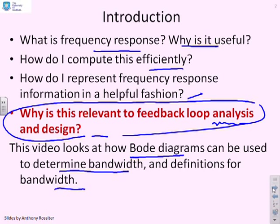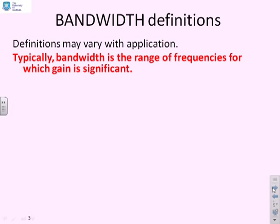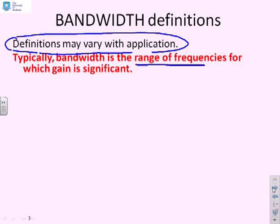First, let's start with some definitions for bandwidth. We'll emphasize a point here. Definitions do not need to be fixed. They might vary with the application, so you need to be careful to know what definition you're using before you start. Typically, bandwidth is a range of frequencies for which gain is significant. You might not like the fact that that sentence is a bit vague, but it's also quite precise because it requires you to say what does significant mean?